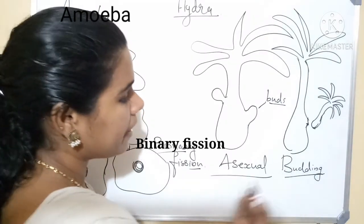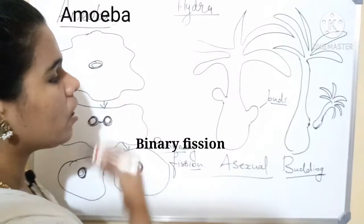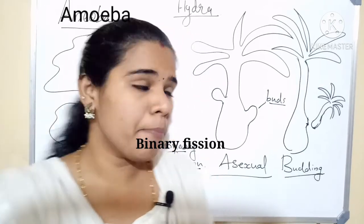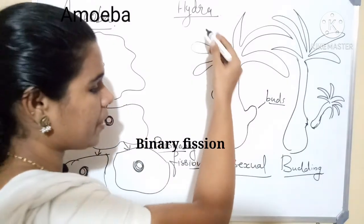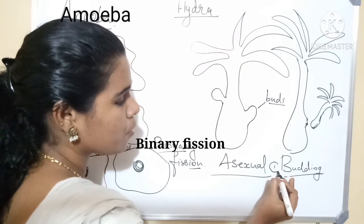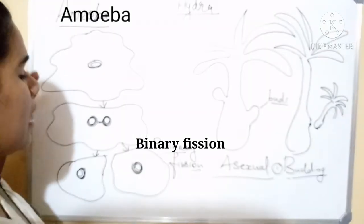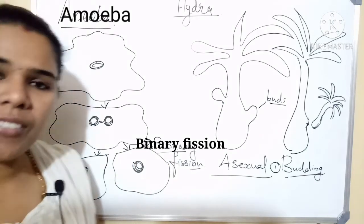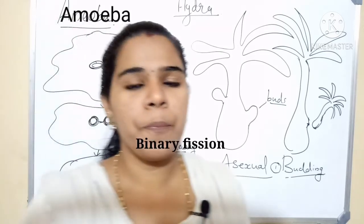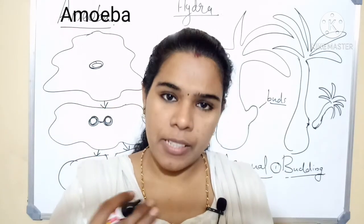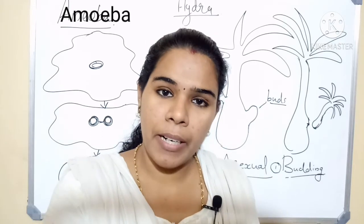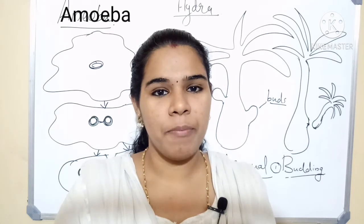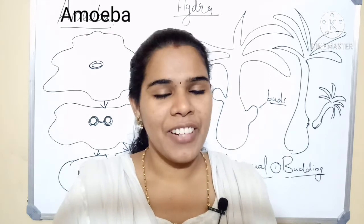Today we learned about asexual reproduction in Hydra and Amoeba. It is very simple: in the case of Hydra, it reproduces through a budding process, and in Amoeba, it reproduces through binary fission. Please study these two processes — budding and binary fission — well. Please watch this video. Have a nice day, thank you.